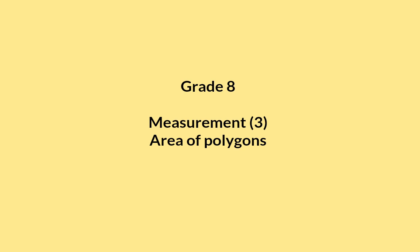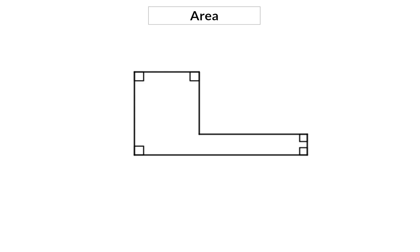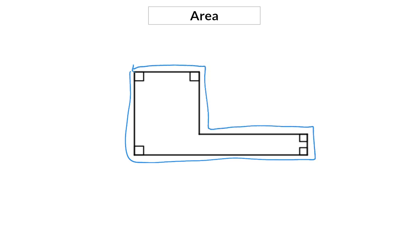In this video we're going to have a look at how to determine the area of a polygon. In the previous videos we had a look at the perimeter of a shape, that is the distance right around the shape. Next we're going to have a look at the area, that is the size of the space that the shape covers.